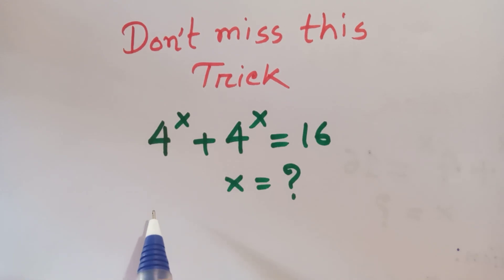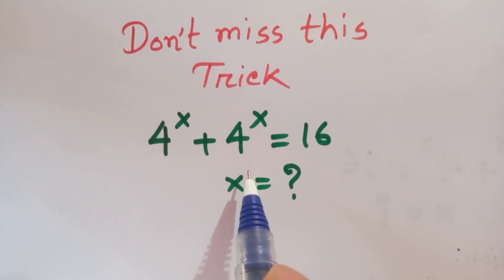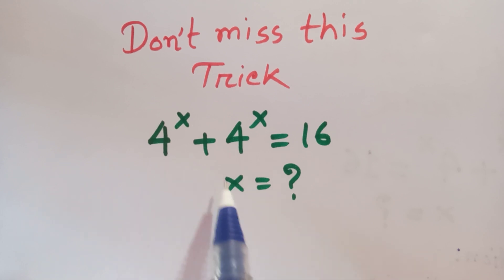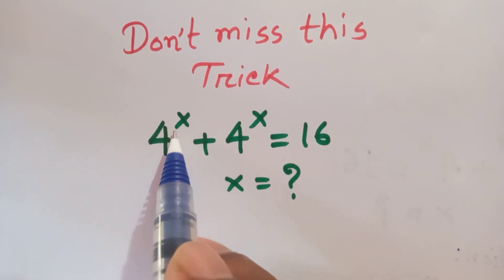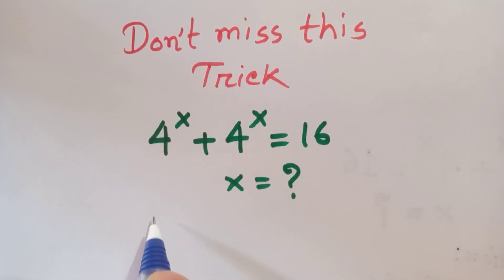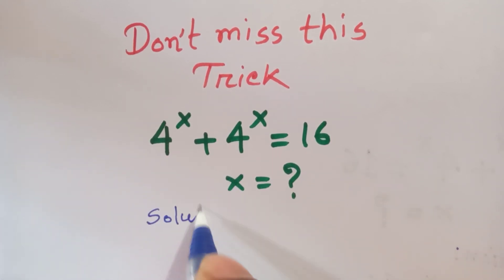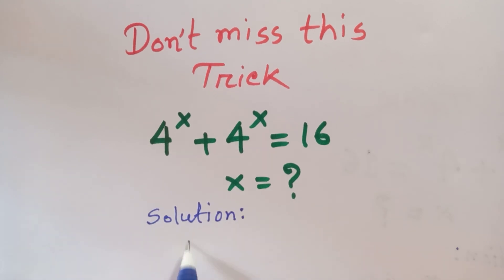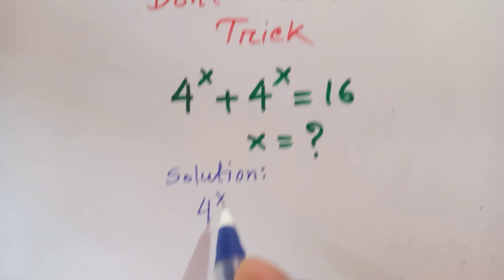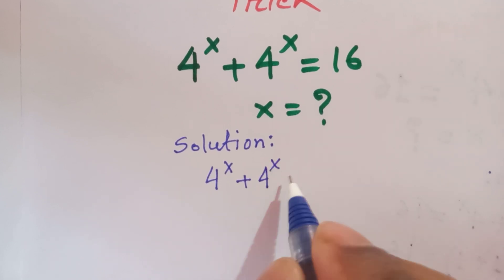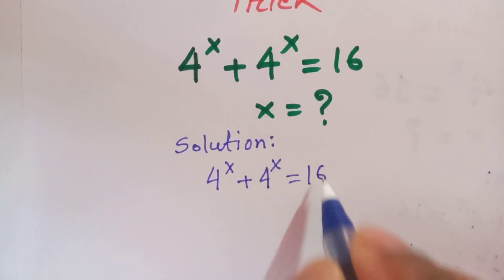Hi everyone, welcome. In this video I am going to show how to find the value of x where 4 to the 4x plus 4 to the 4x is equal to 16. We have given: 4 to the 4x plus 4 to the 4x is equal to 16.